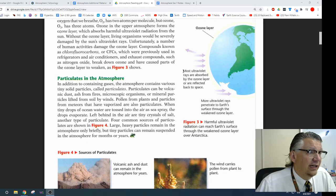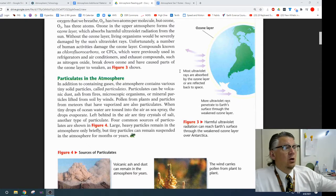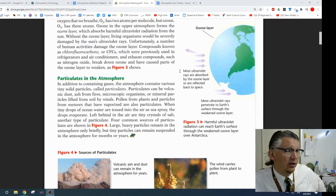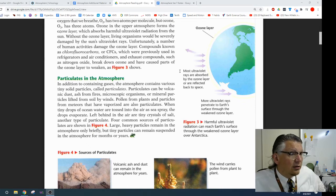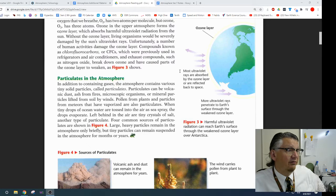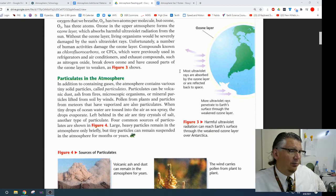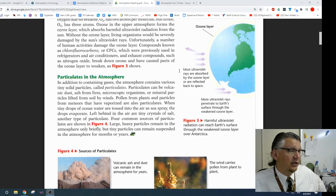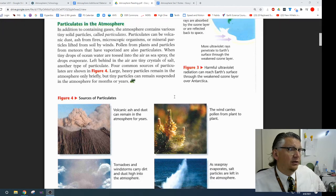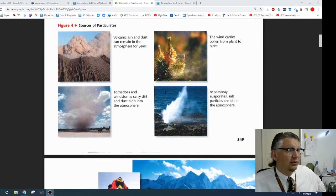In addition to containing gases, the atmosphere contains various tiny solid particles called particulates. Particulates can be volcanic dust, ash from fires, microscopic organisms, or mineral particles lifted from the soil by winds. Pollen from plants and particles from meteors that have vaporized are also particulates. When tiny drops of ocean water are tossed into the air as sea spray, the drops evaporate. Left behind in the air are tiny crystals of salt, another type of particulate. Four common sources of particulates are shown in Figure 4. Large, heavy particulates remain in the atmosphere only briefly, but tiny particulates can remain suspended in the atmosphere for months or years.